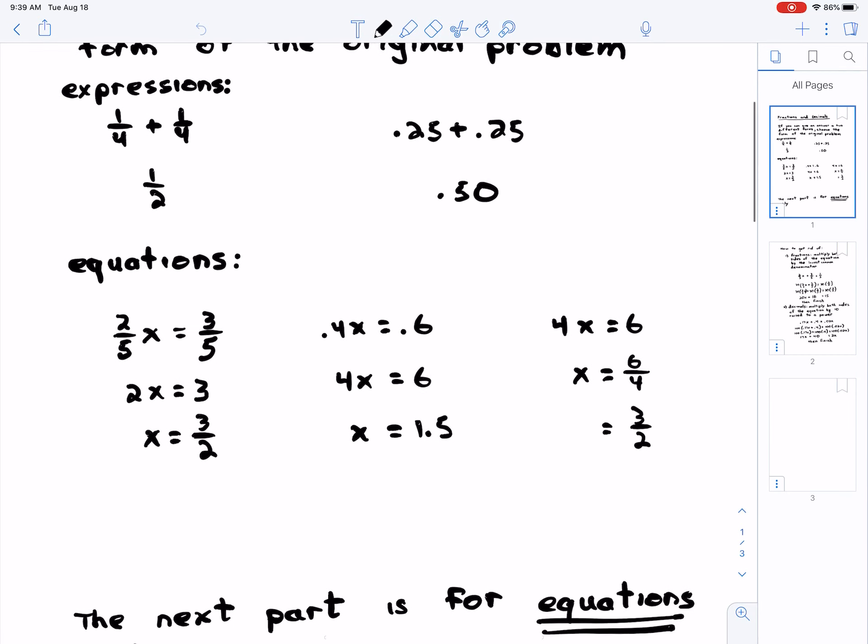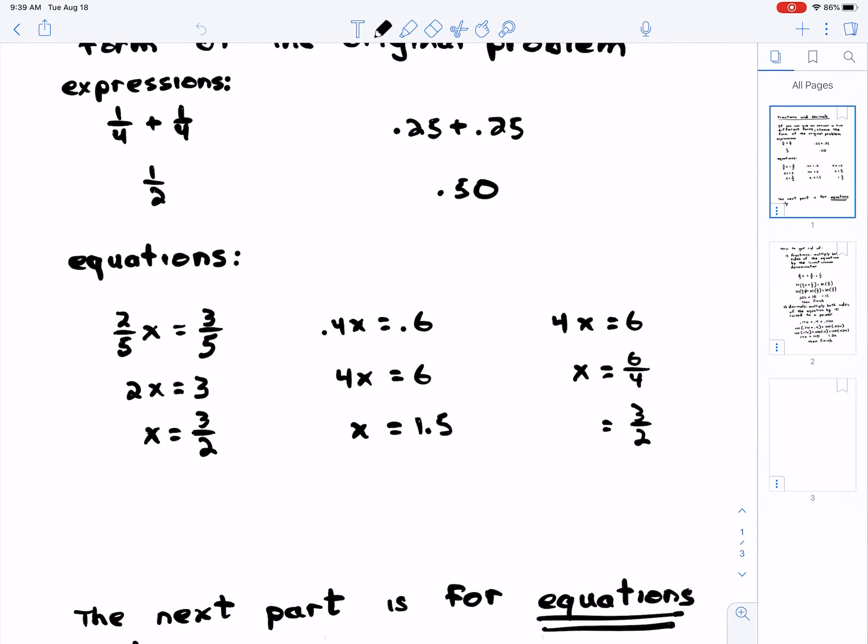Those are expressions. This would also apply to equations. So if we have two-fifths x equals three-fifths, then if we multiply both sides by five to get rid of the fractions, and I'll talk about that another day, you get 2x equals three and x equals three-halves. Not 1.5, but three-halves.